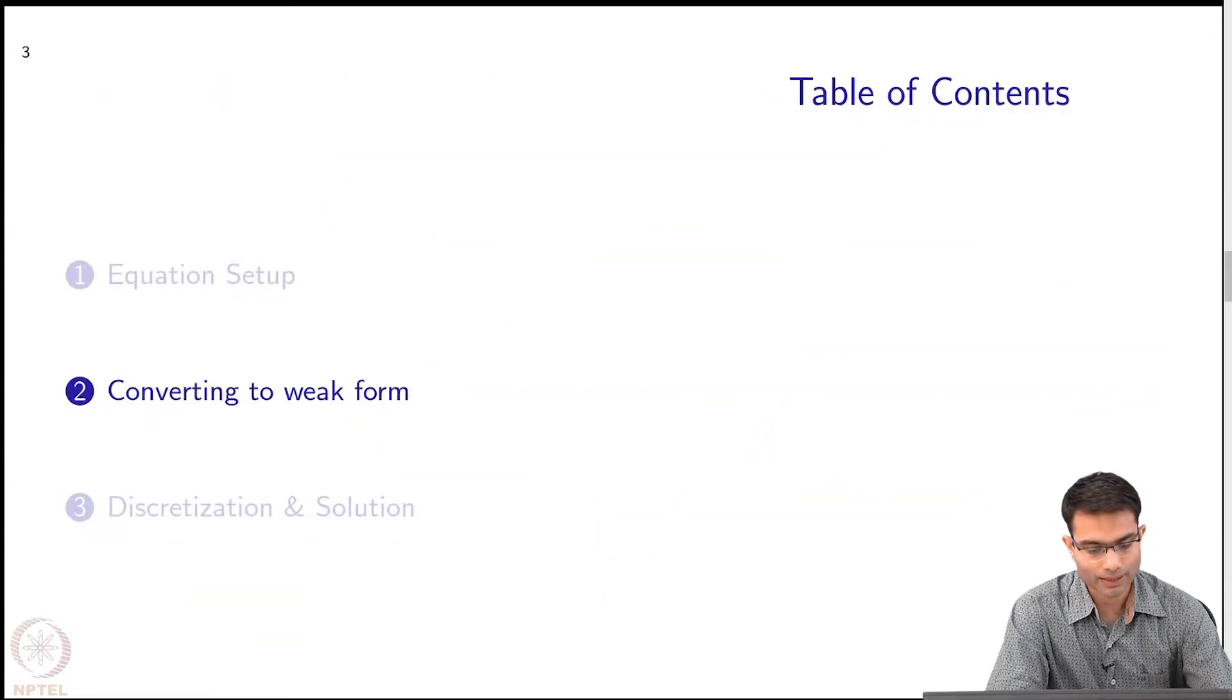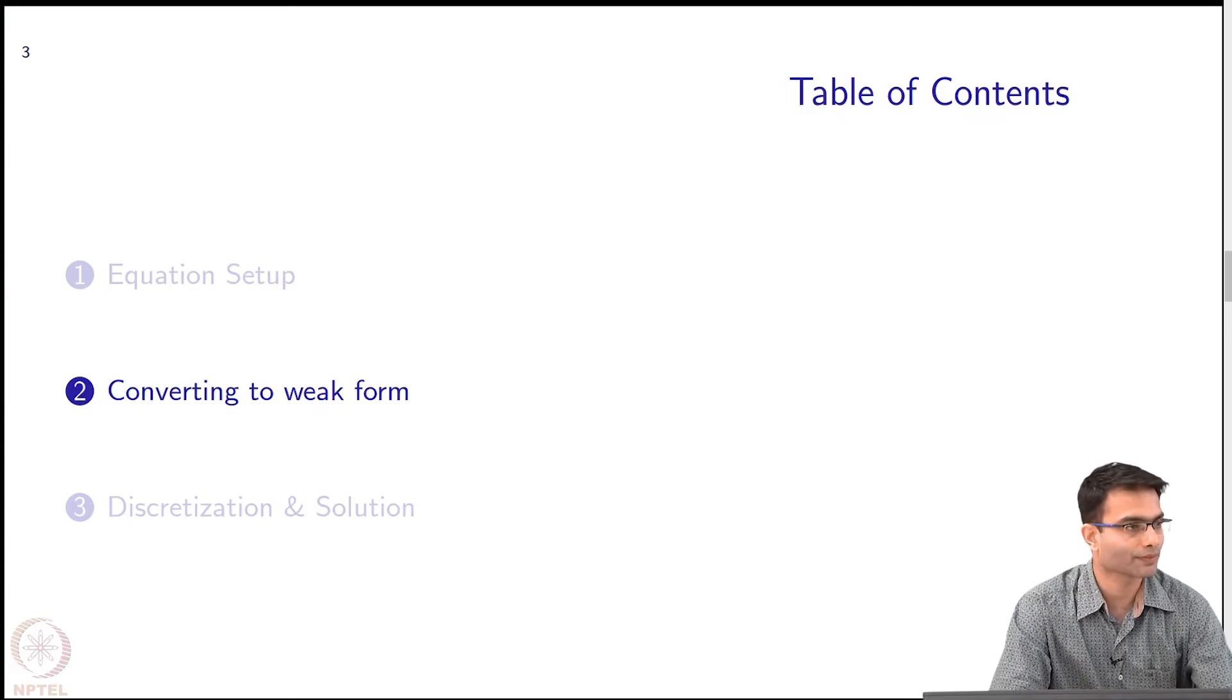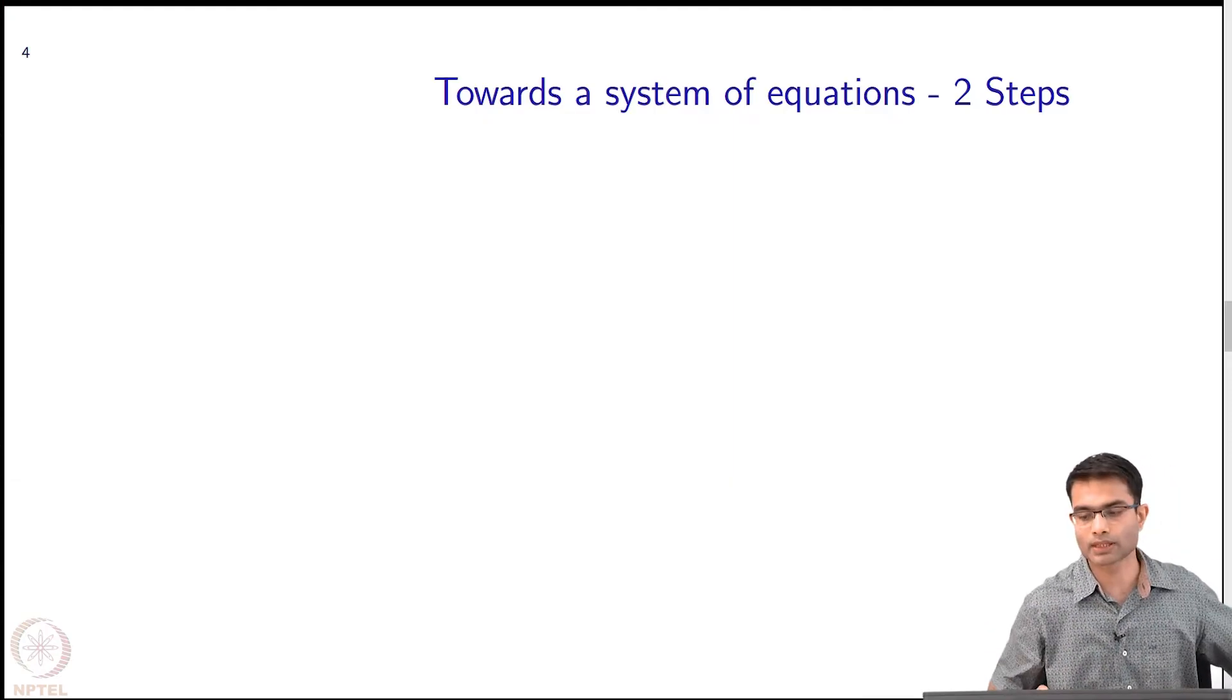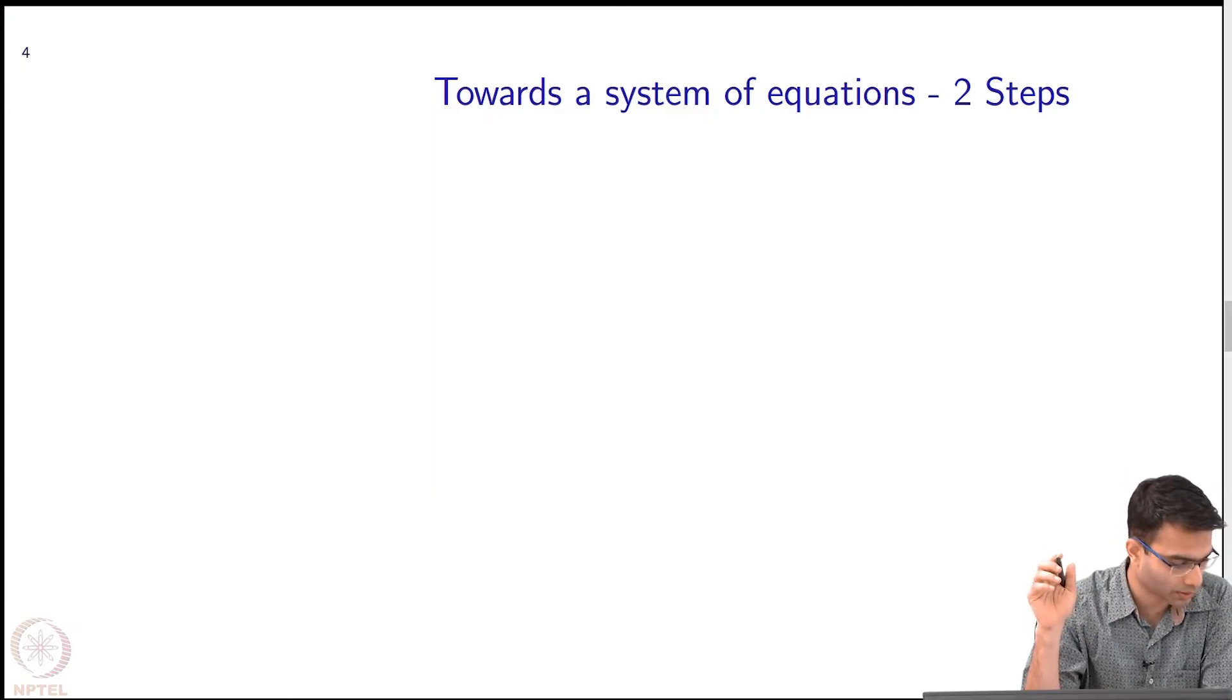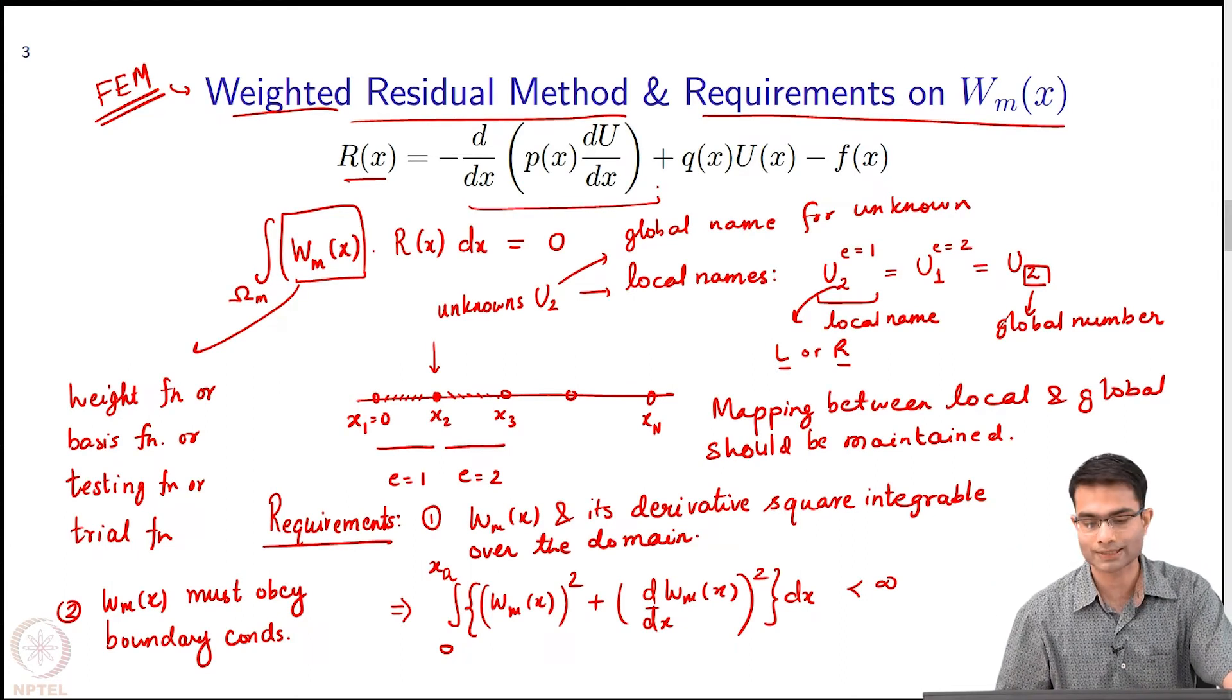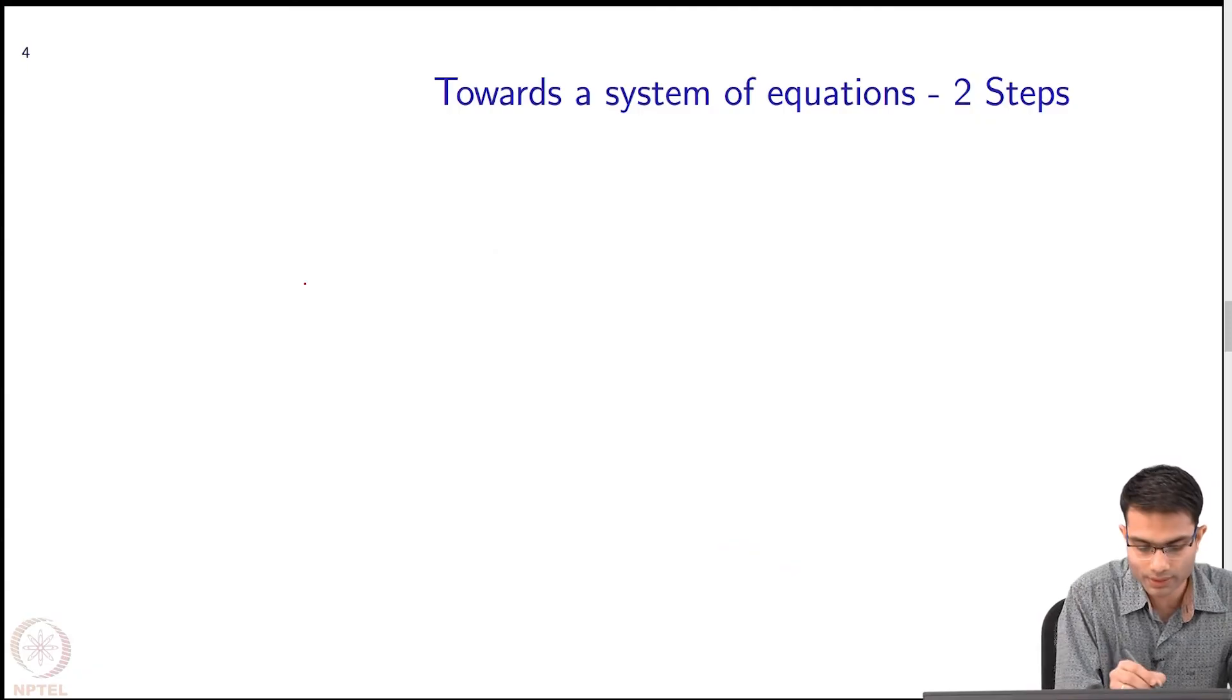Now with this having been established, let us look at one of the very key steps of this FEM which is converting to what is called a weak form. What we will do is consider two steps which will help us to accomplish this. Let us go back to our equation. If you notice our equation over here, let us look at this one term. There is a double derivative and there is a W function next to it. So let us look at step 1.